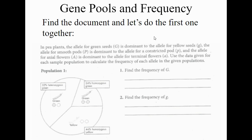Let's look at our first example. Make sure you have 2.02 pulled up. We're going to work through these problems together.